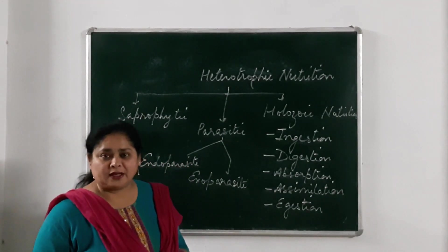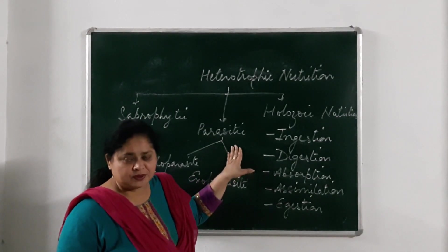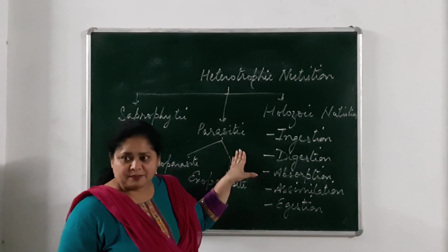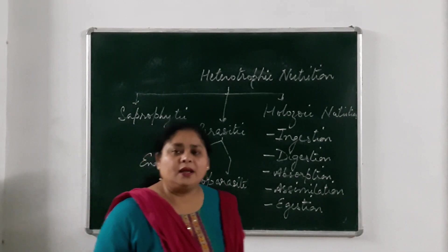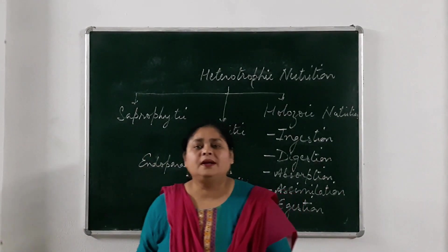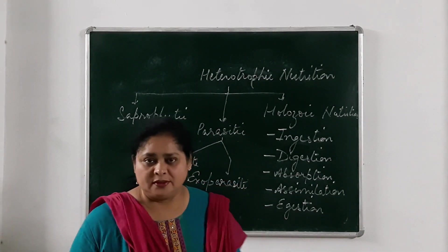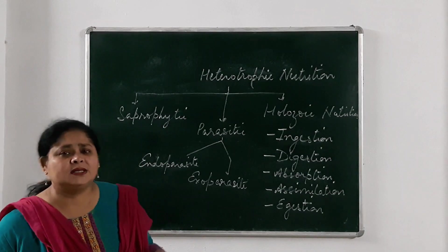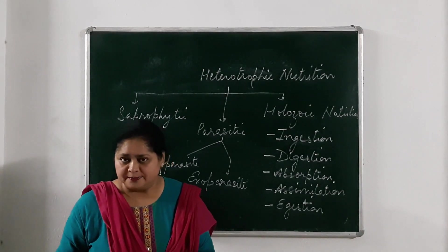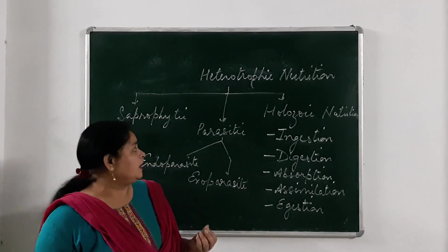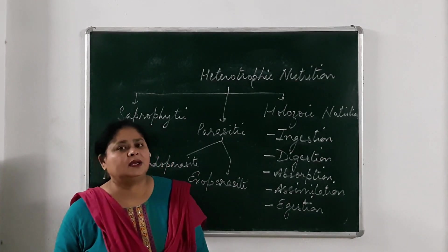This mode of nutrition is known as saprophytic nutrition. The next one is parasitic nutrition. Parasites are living organisms which live on or inside the body of other living organisms to obtain ready-made food. This food is mostly in the form of blood or already digested material. They obtain ready-made food from the other living organisms.